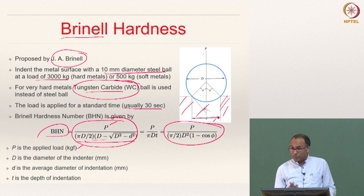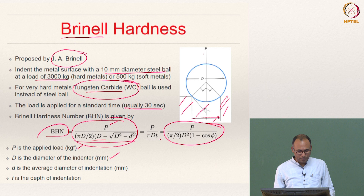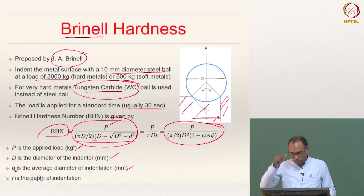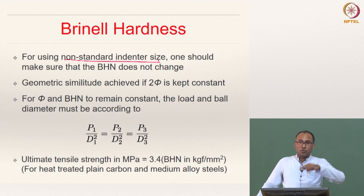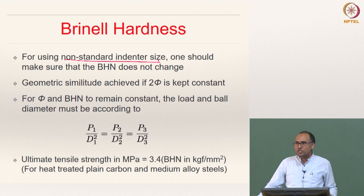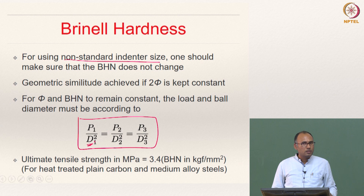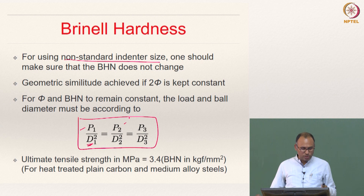P is the load applied in kgf, D is the ball diameter in mm, and small d is the average diameter of the indentation. T is the depth of indentation, which you can measure. If you want to use a non-standard indenter size — say a 5 mm ball instead of 10 mm — you also have to change the load. With a 10 mm ball, the standard load is 3000 kg. You need to maintain P divided by D-squared constant: P1/D1² = P2/D2². This ensures geometric similitude, and the Brinell hardness number is proportional to that ratio.